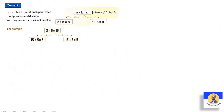Remember the relation between multiplication and division in a fact family: if A times B equals C, then C divided by A equals B, or C divided by B equals A. For example, five times three equals fifteen, so fifteen divided by five equals three, and fifteen divided by three equals five. Multiplication and division are opposites.